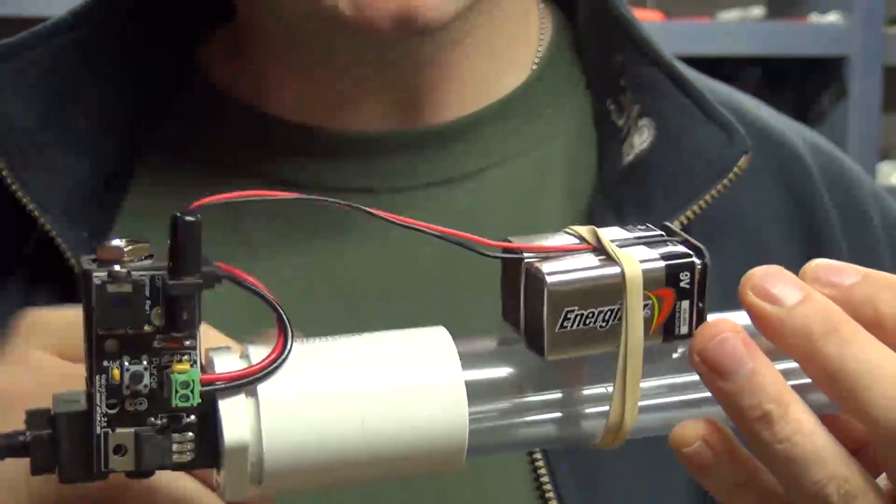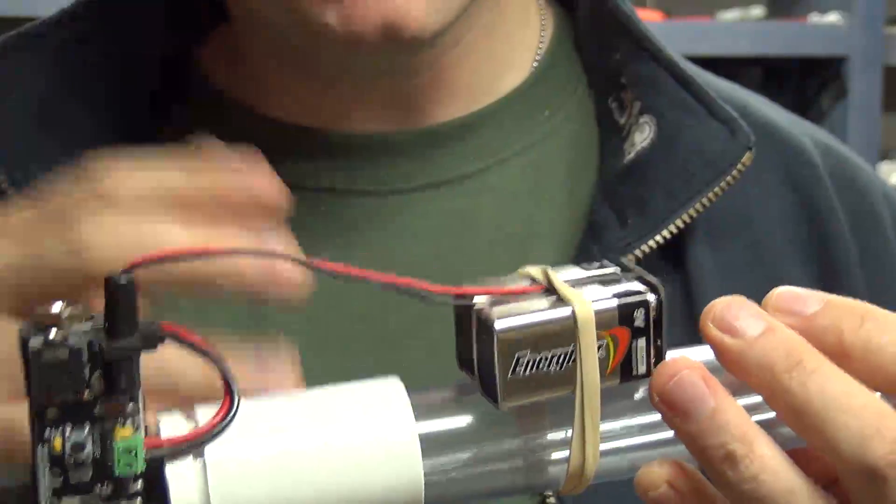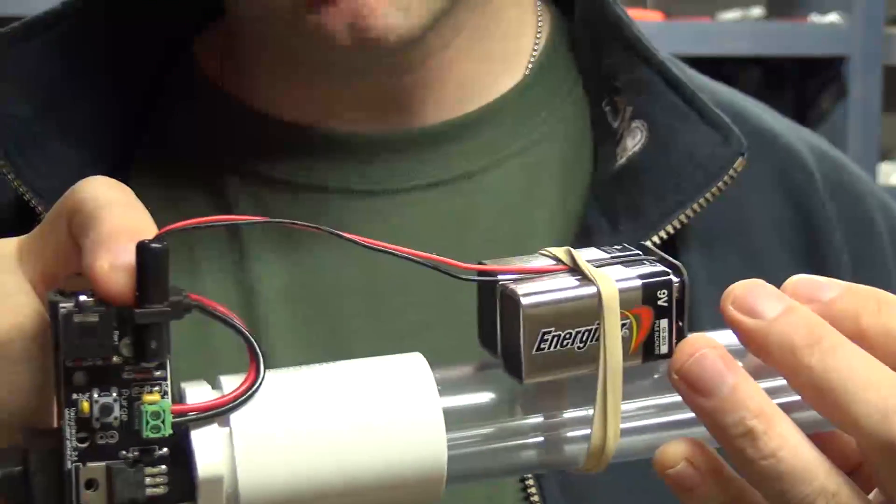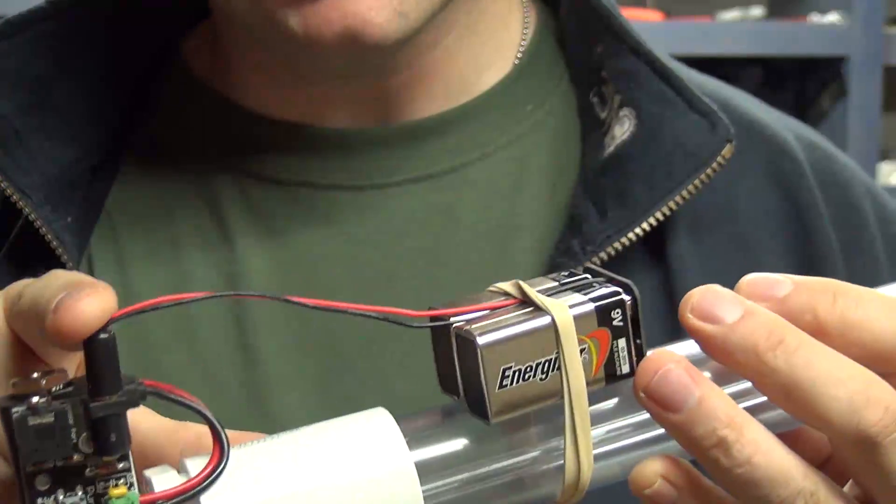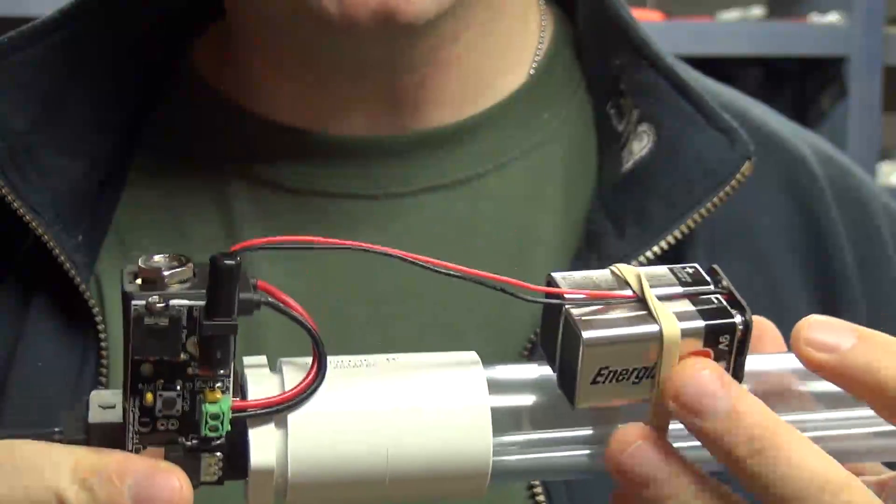Now if anybody has the old valve sensor and they want to make this change, it's pretty easy to do. You just need to basically use a standard 2.1 millimeter jack and wire up two 9 volt batteries to it and you should be good to go.